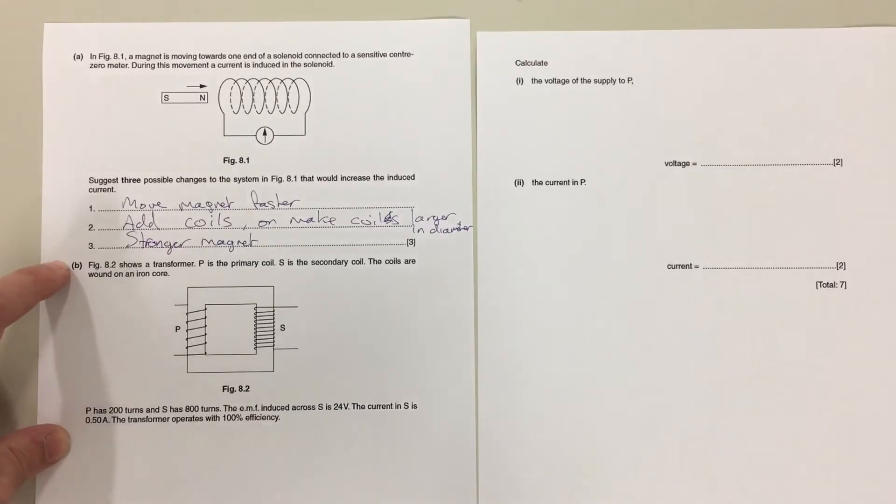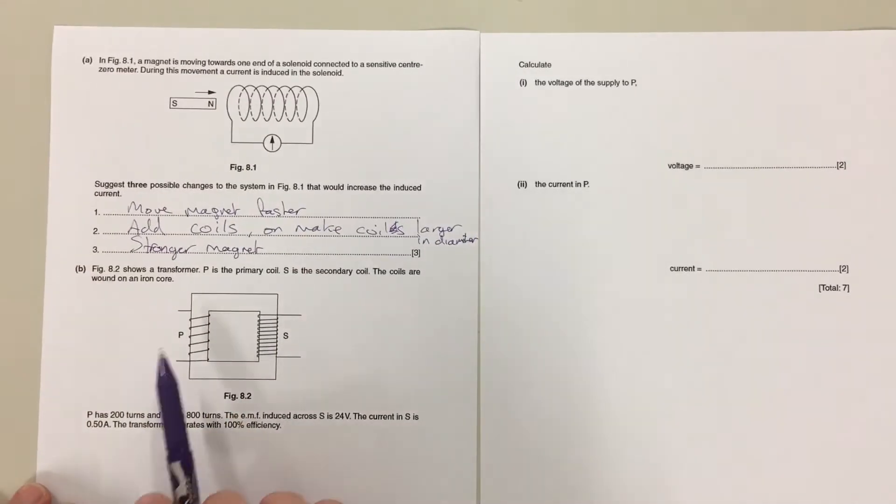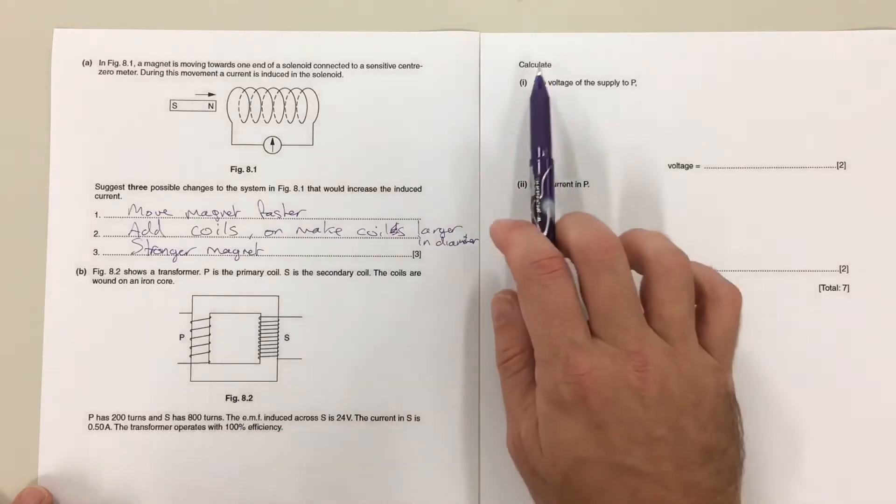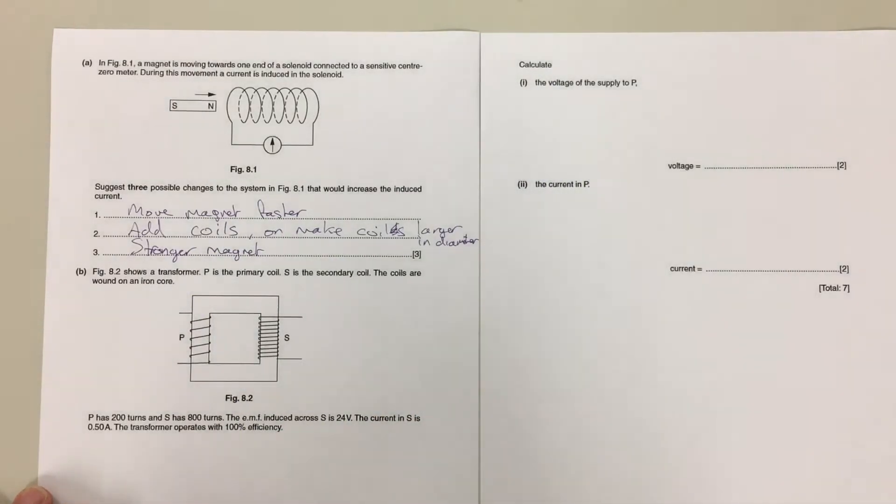The second section seems to be about transformers. We've got a picture of a transformer here with a primary and a secondary coil marked here and it wants you to calculate the voltage of the supply to P. Now let's have a look at what information we've got so far. At the moment we're only talking about P so let's write all the information that we've got for P.